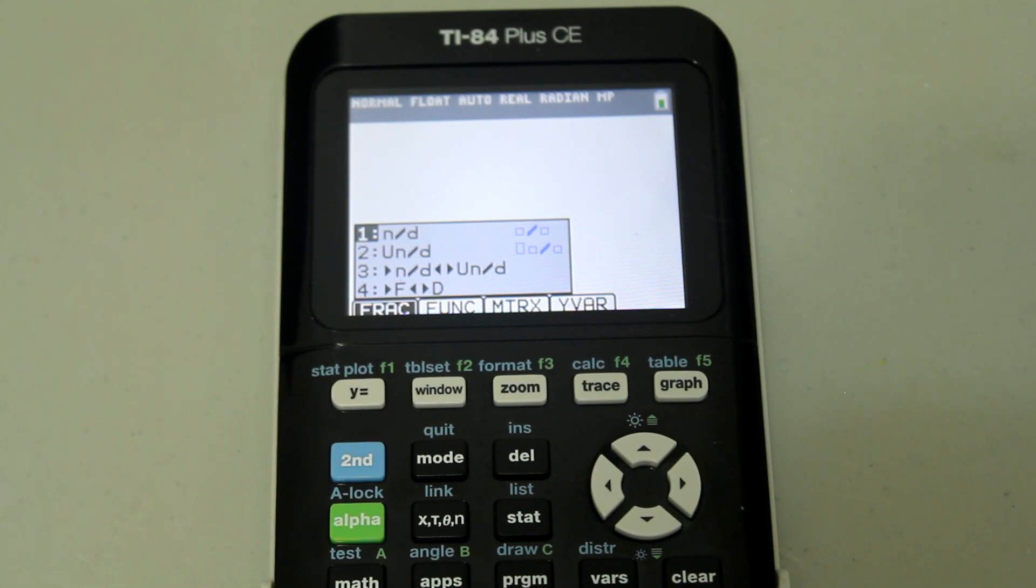The first option is the fractions option, the second one is mixed numbers, the third one allows you to convert between fractions and mixed numbers, improper fractions and mixed numbers, and the fourth one allows you to convert between fractions and decimals.